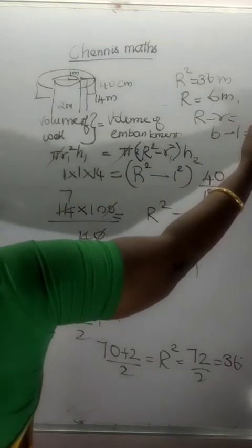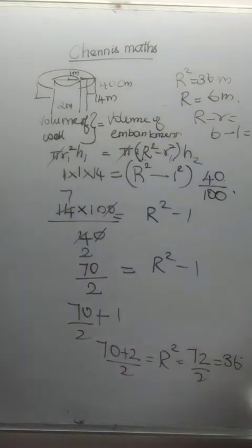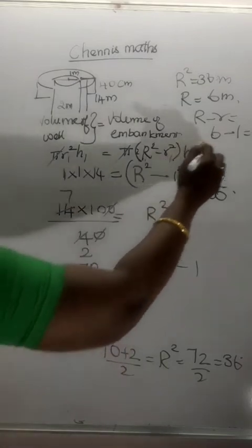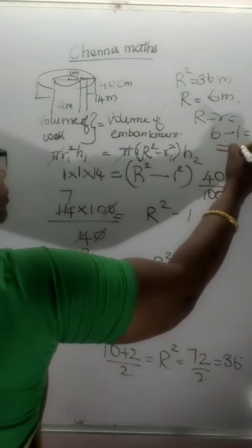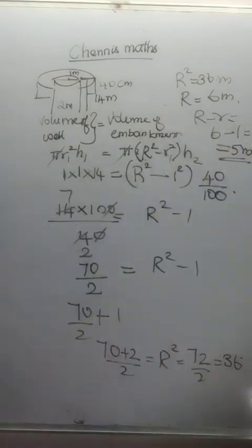Therefore, R squared is 36, so R equals 6. The width of the embankment equals R minus r, which is 6 minus 1, equal to 5 meters. The width of the embankment is 5 meters.